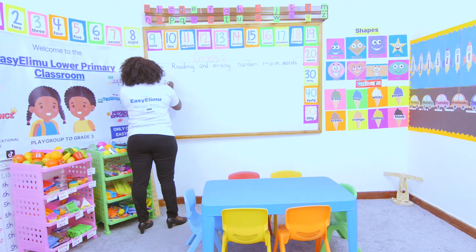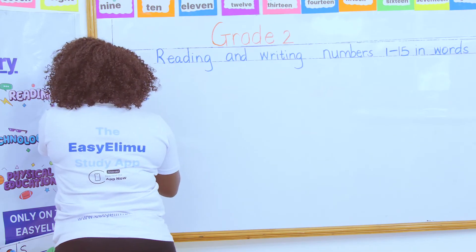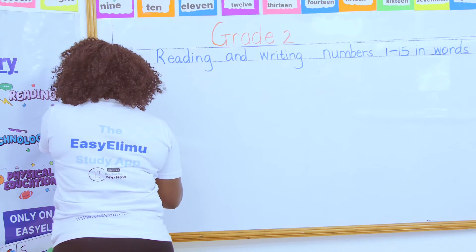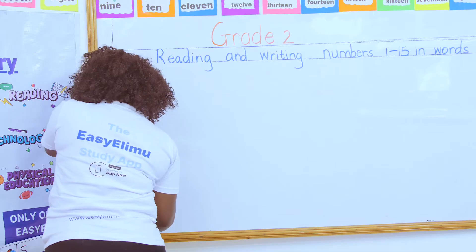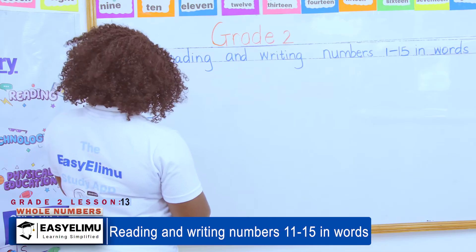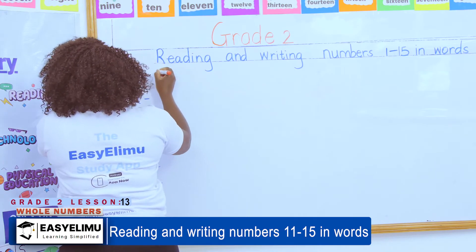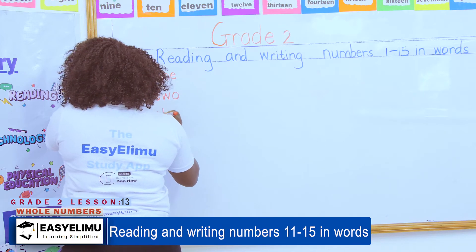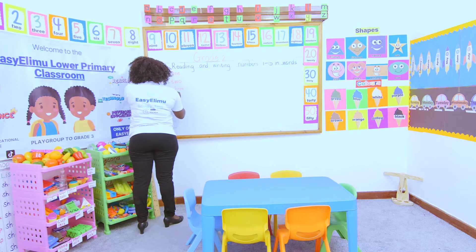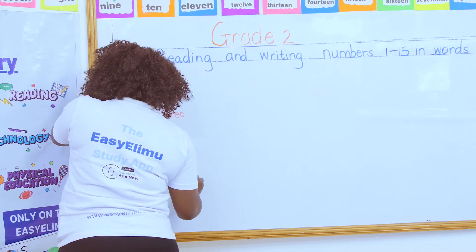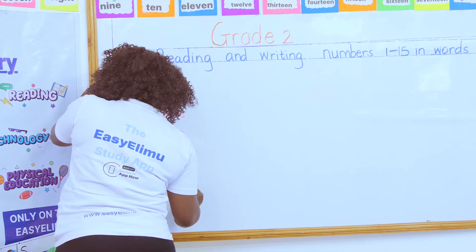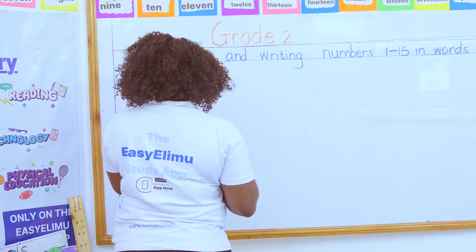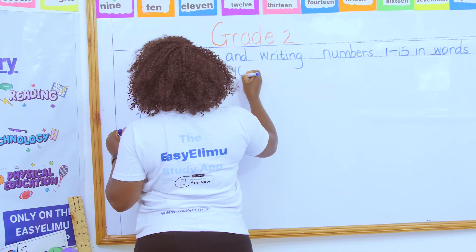In the two previous lessons we started with number one and were able to write it in words: two, three, four, five, six, seven, eight, nine. Very good! Someone was telling me, 'Teacher, now we can write these numbers very fast and very well, in words and in figures.' Very good! We also did five through ten.